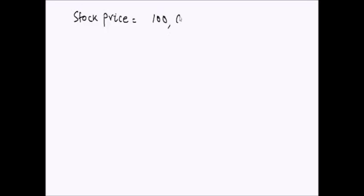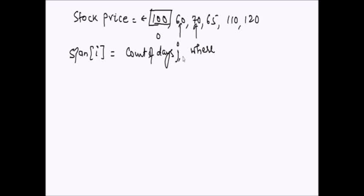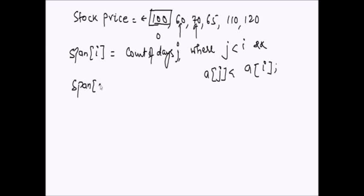Let's take the stock price list: 100, 60, 70, 65, 110, 120. On day 0 the price is 100, day 1 is 60, and so on. The span of day i is the count of consecutive days j less than i where the price a[j] is less than a[i]. Span of day 0 is always 1.